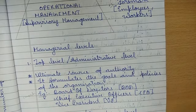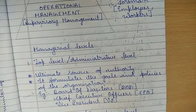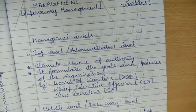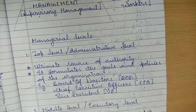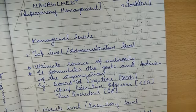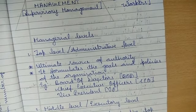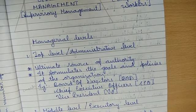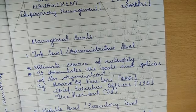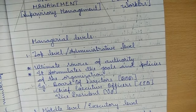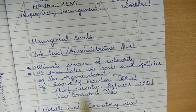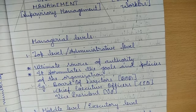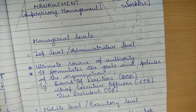The top level management formulates the goals and policies of the organization. The owner, president, or CEO decides what goals to achieve each year. They may ask for one mark: what are examples of top level management? The answer is board of directors, chief executive officer, and vice president. Definitions of each level are generally not asked, but understanding them is helpful.